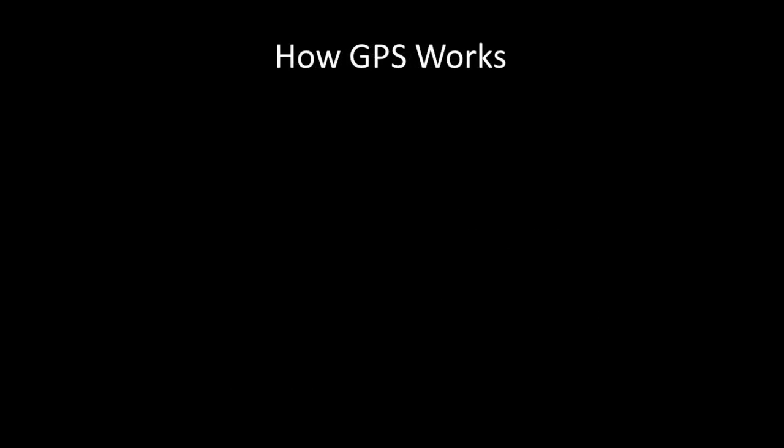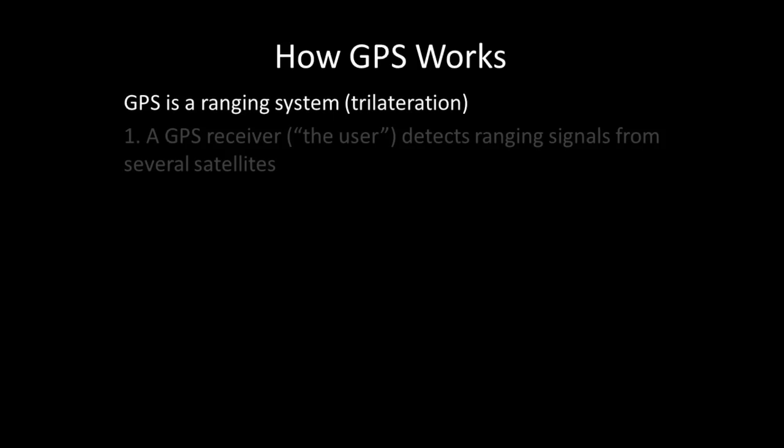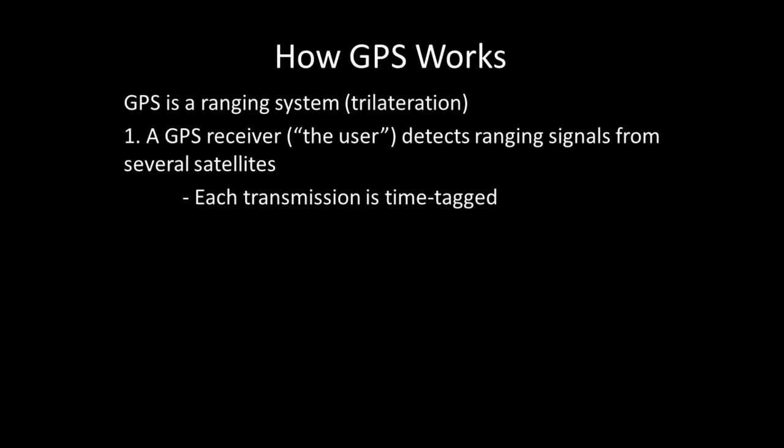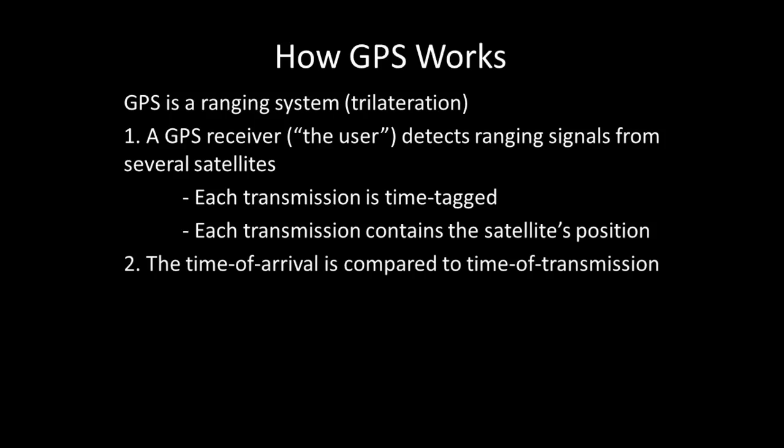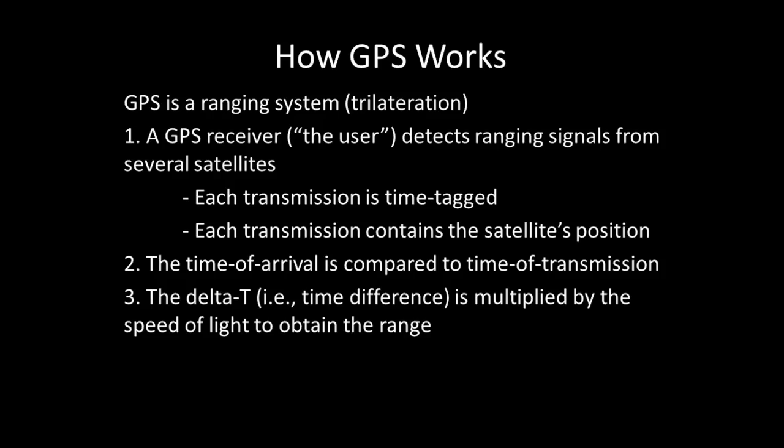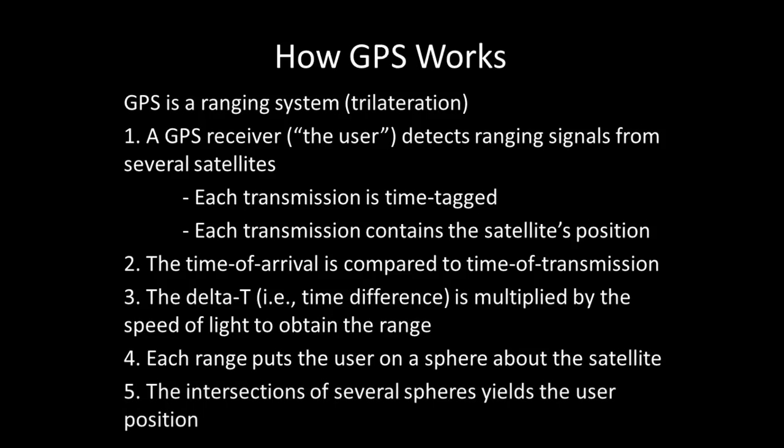Here is an overview of how GPS works and described in five steps. GPS is a ranging system. A GPS receiver, or the user, detects ranging signals from several satellites. Each transmission is time-tagged, and each transmission contains the satellite's position. The time of arrival is compared to the time of transmission. The delta t, or time difference, is multiplied by the speed of light to obtain the range. Each range puts the user on a sphere about the satellite. The intersections of several spheres yields the user position.